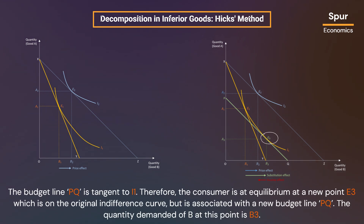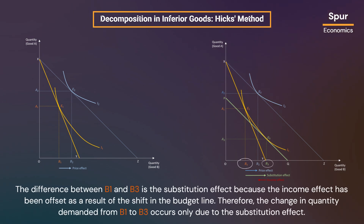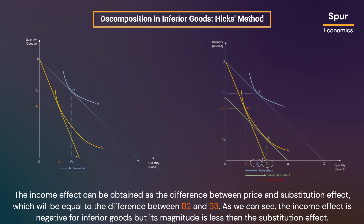The budget line PQ is tangent to I1. Therefore, the consumer is at equilibrium at a new point E3, which is on the original indifference curve but is associated with the new budget line PQ. The quantity demanded of B at this point is B3. The difference between B1 and B3 is the substitution effect because the income effect has been offset by the shift in the budget line. The income effect can be obtained as the difference between the price and substitution effects, equal to the difference between B2 and B3. As we can see, the income effect is negative for inferior goods but its magnitude is less than the substitution effect.